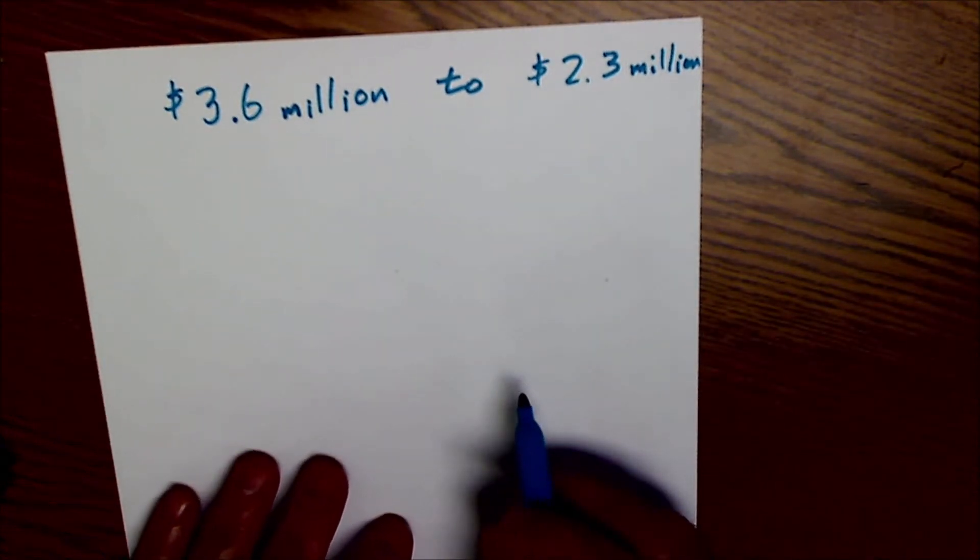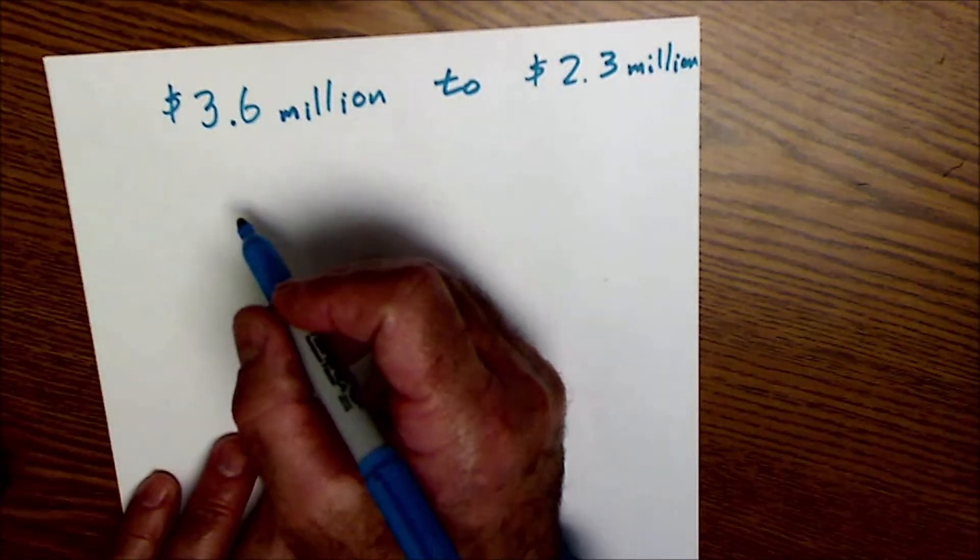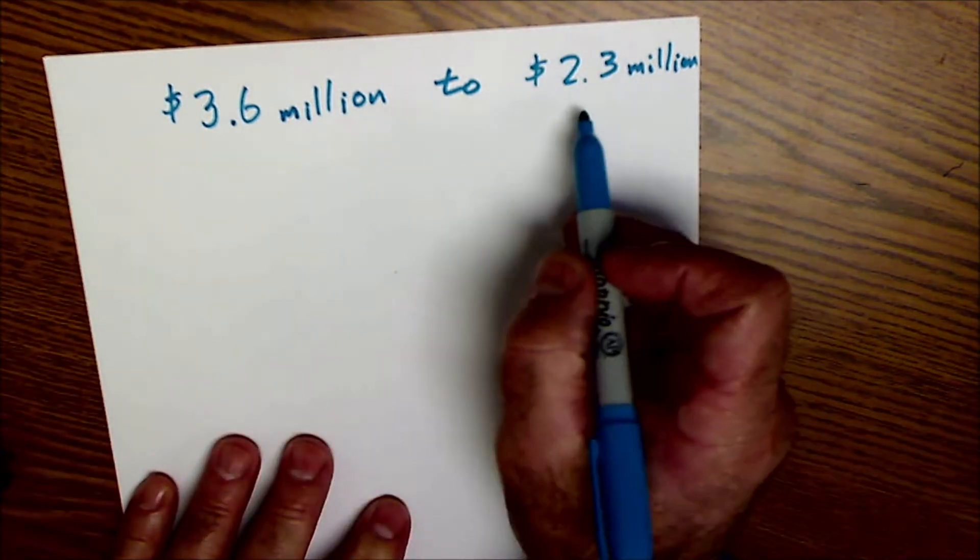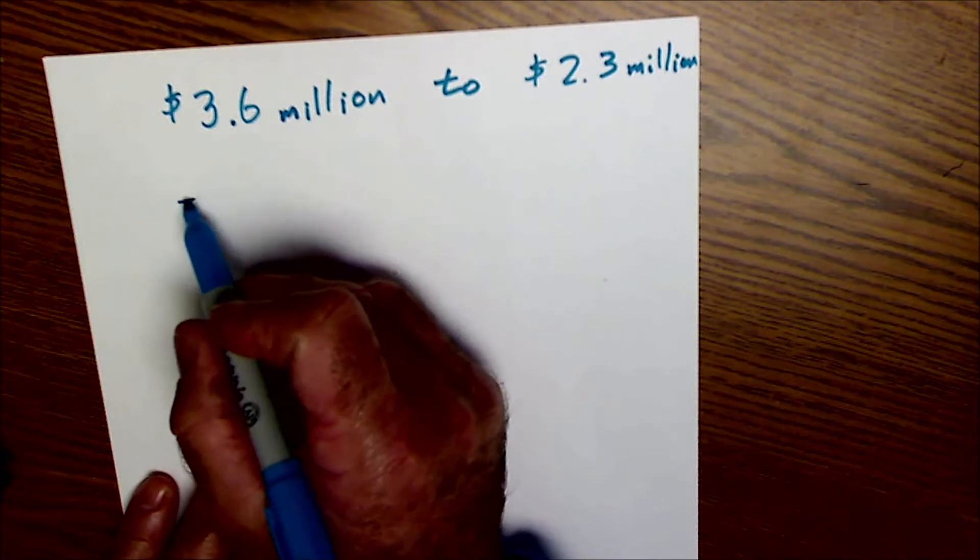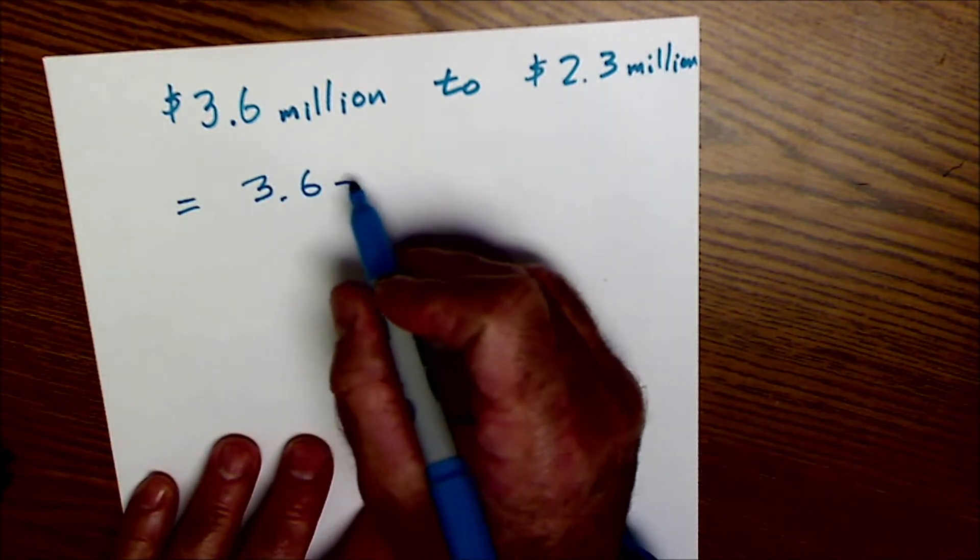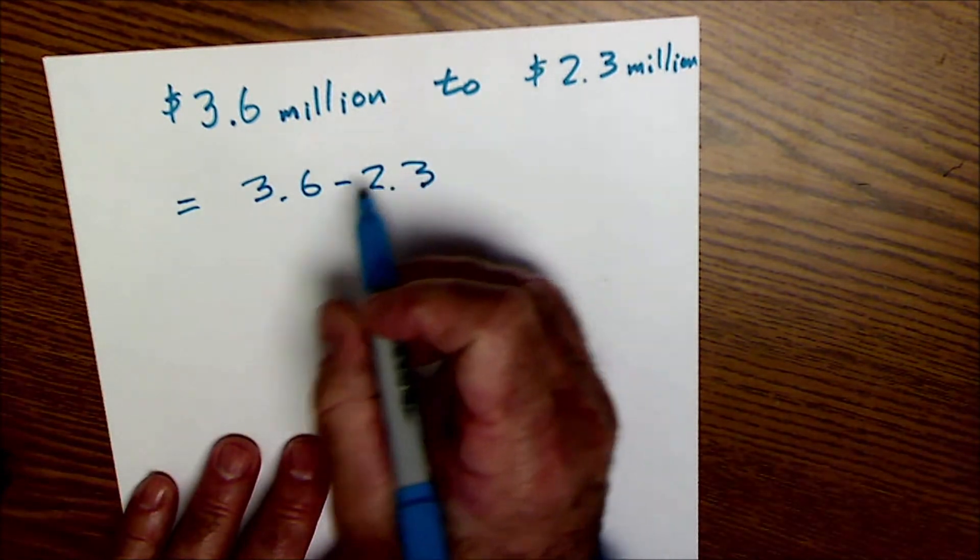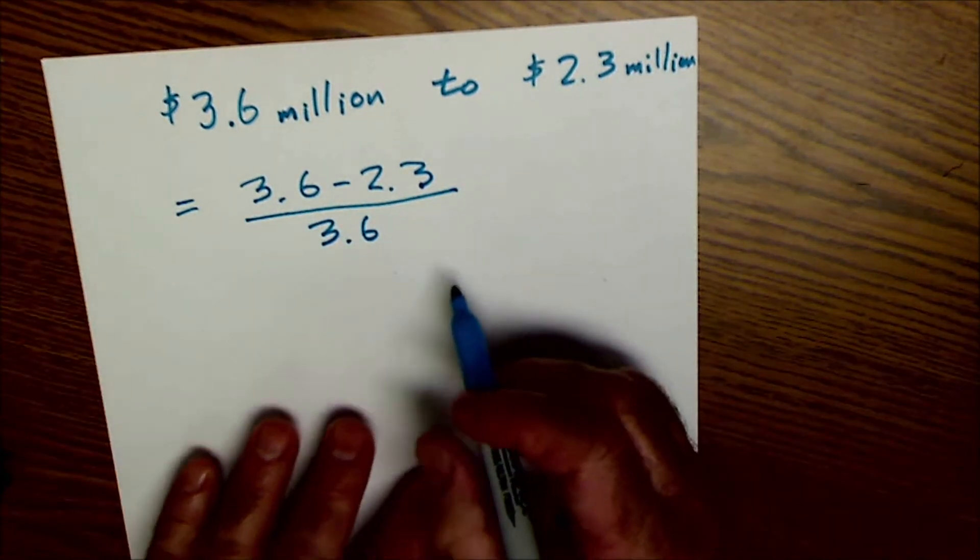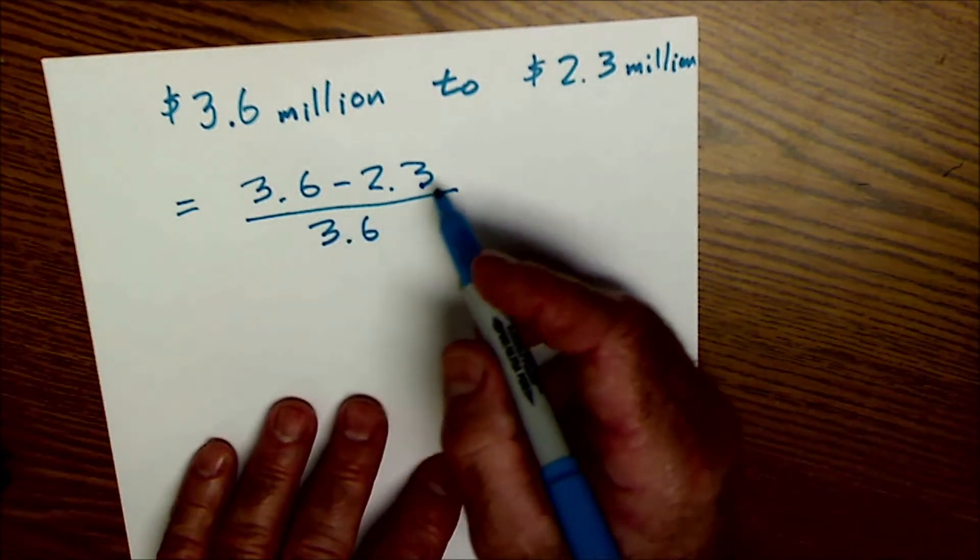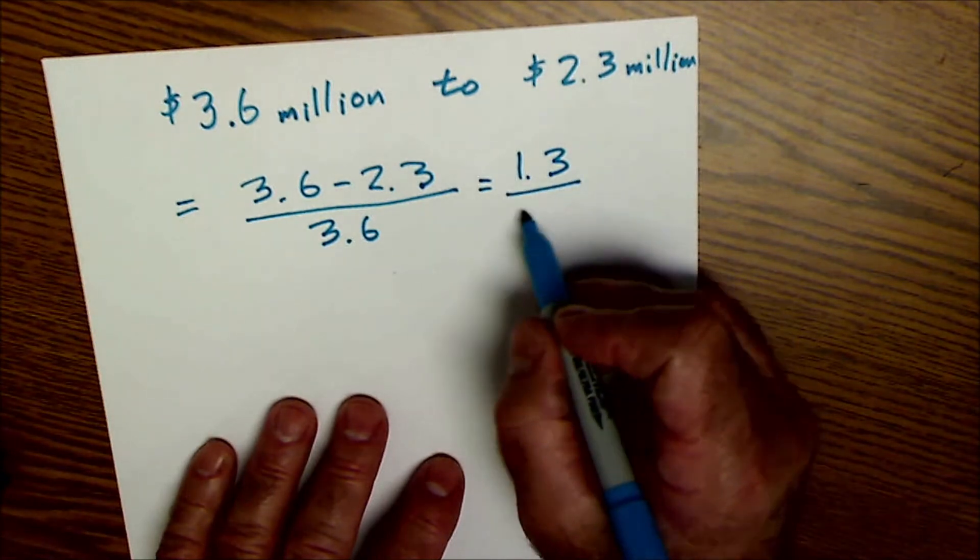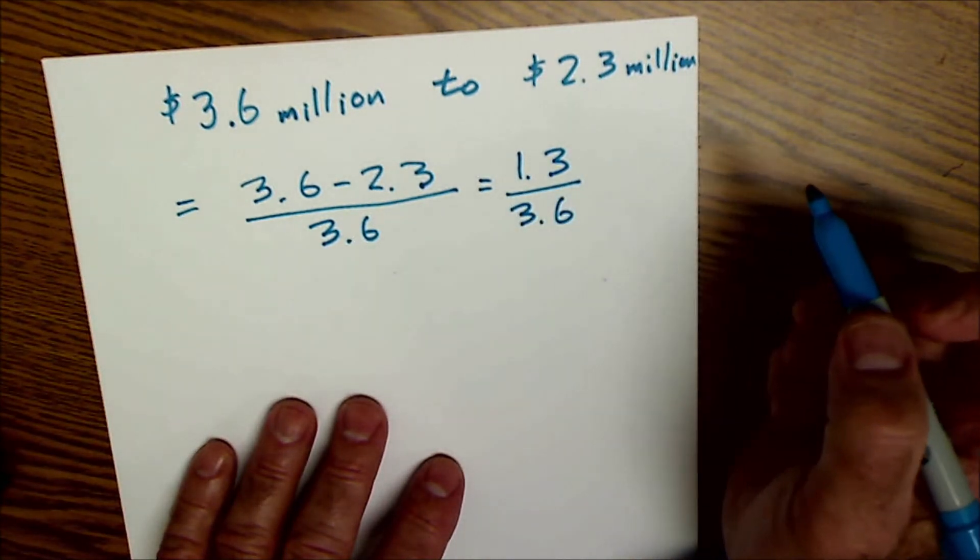So again, it's the amount of change over the original number. Let's say I had $3.6 million in an investment, and it changed to $2.3 million. The amount of change would be $3.6 million minus $2.3 million divided by the original amount. So $3.6 million minus $2.3 million is going to be equal to $1.3 million divided by the original amount of $3.6 million.